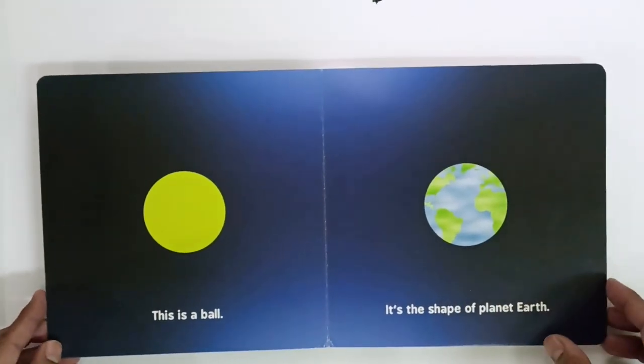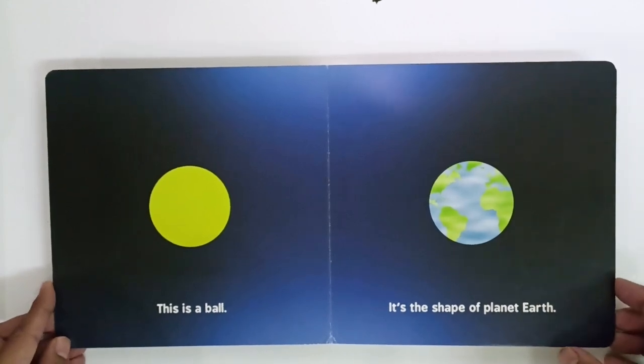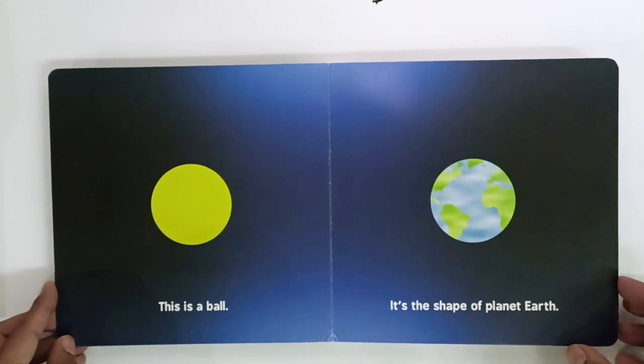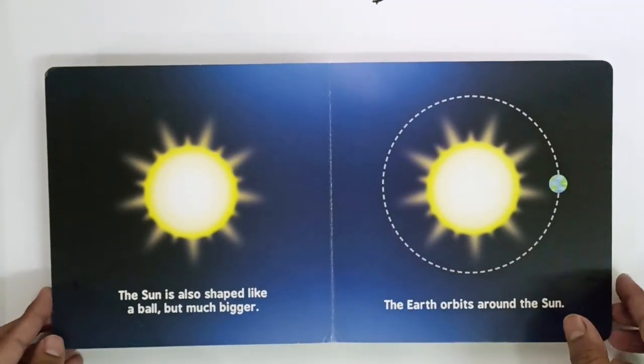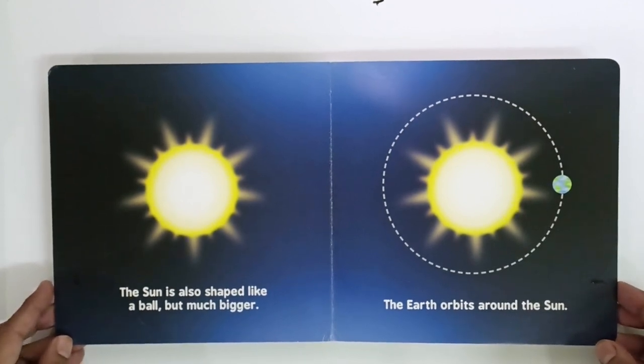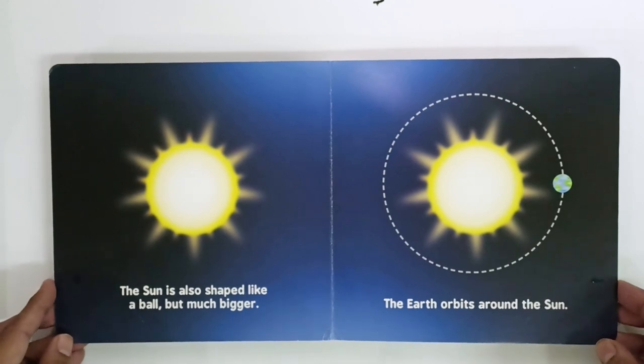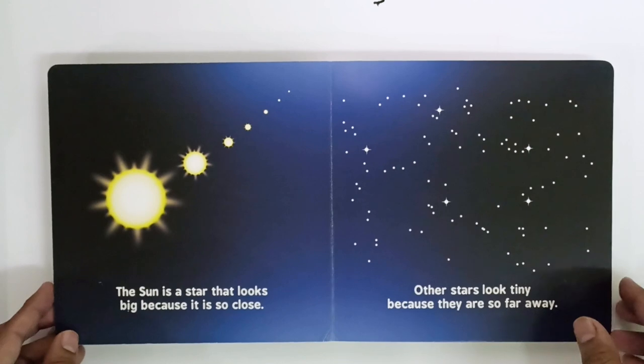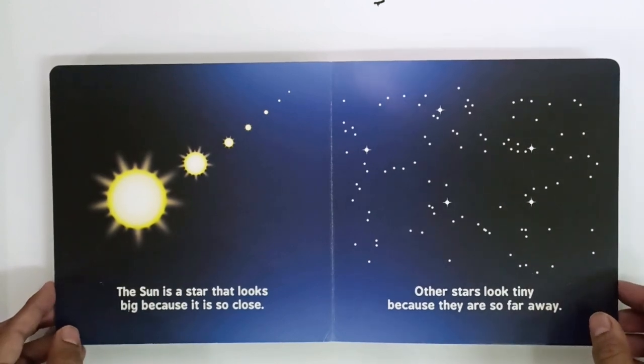This is a ball. It's the shape of planet Earth. The Sun is also shaped like a ball, but much bigger.